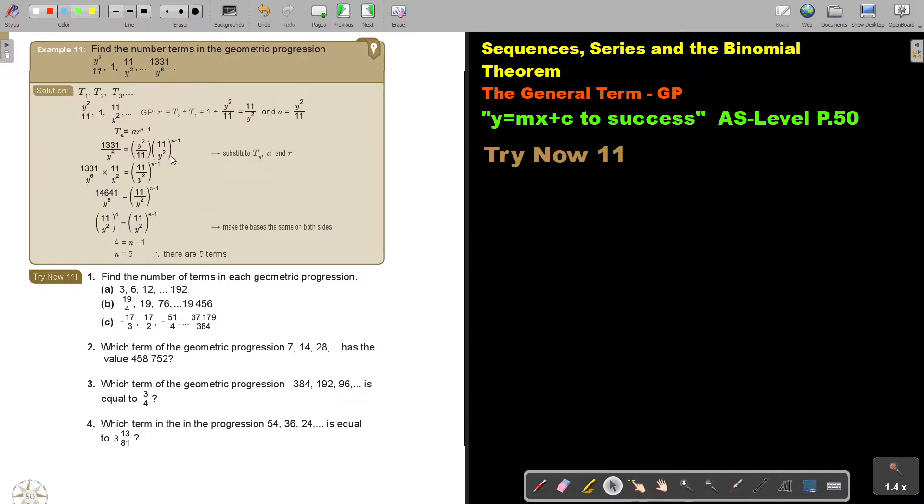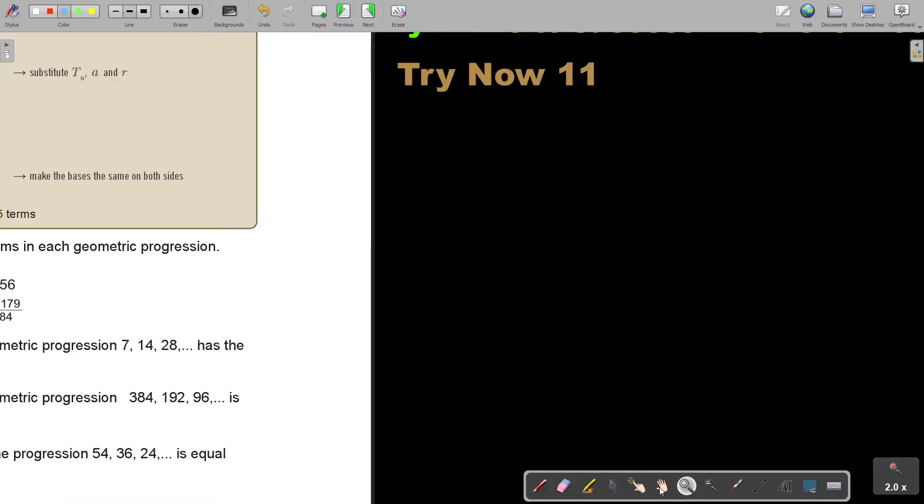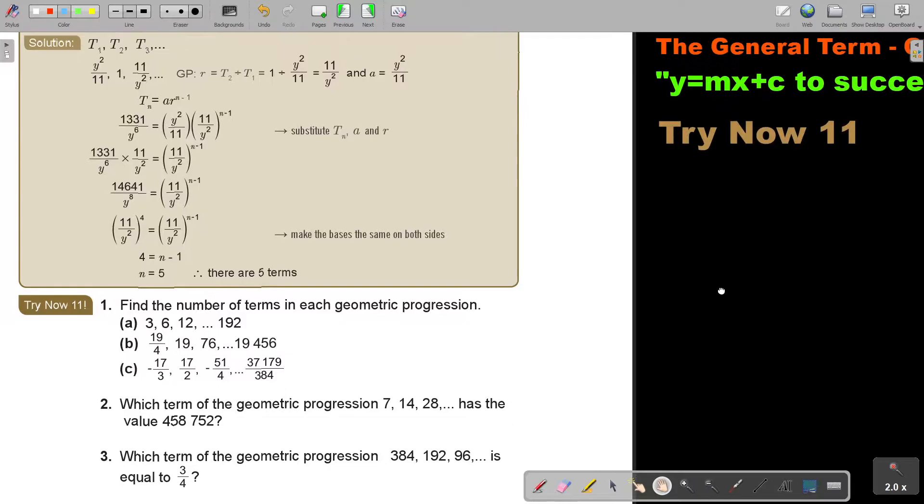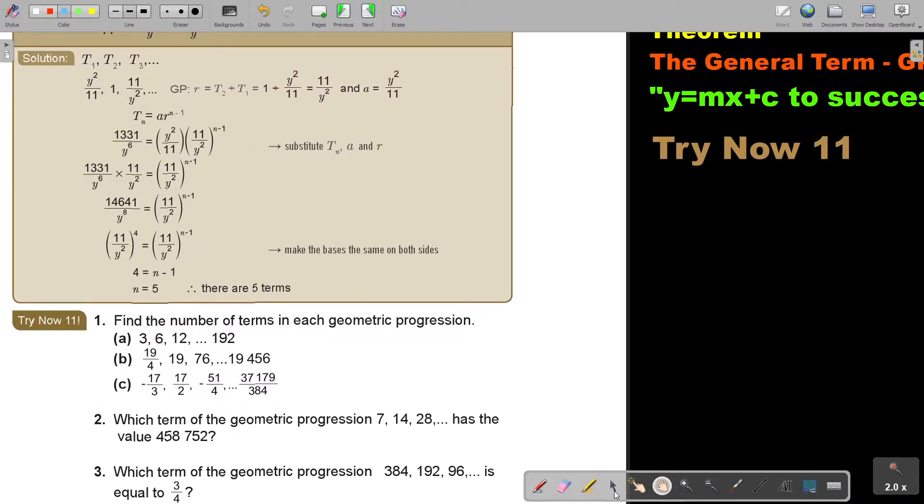And now I just substitute. I substitute that TN, I substitute the value of A, I substitute the value of R. It's maybe a bit more challenging because you make use of indices, but the method is staying the same.